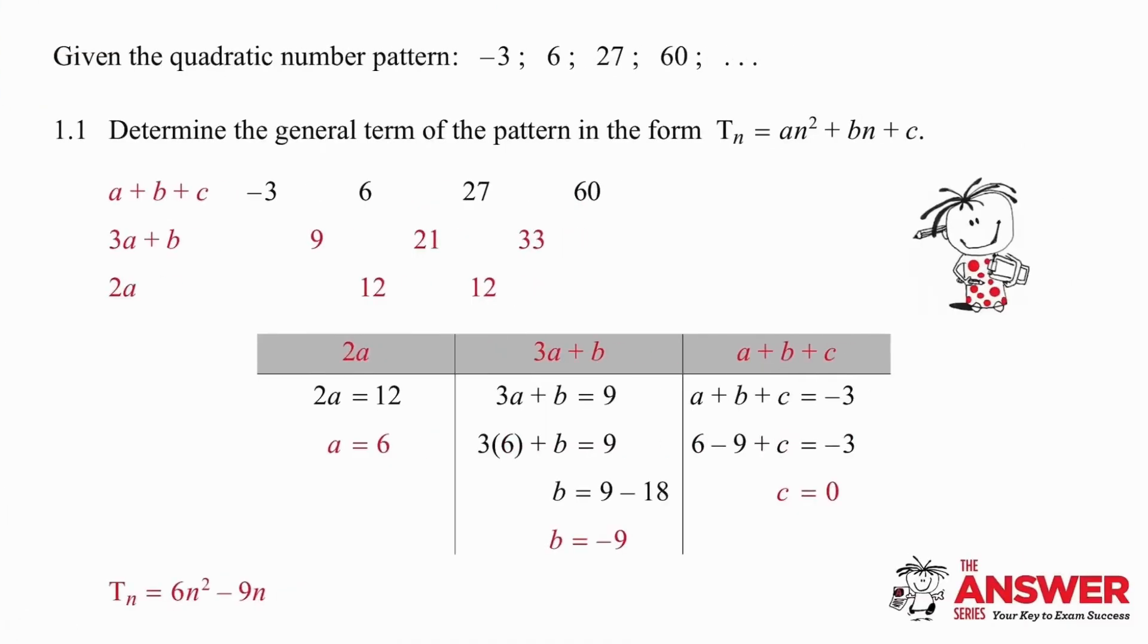In the first question we need to work out the general term of the pattern. This is a routine question and if you are up to date with your work you should manage this very comfortably. We take the given numbers, write them out with little gaps in between so that we can write in the first row of differences. Then we use those results to get the second row of differences.